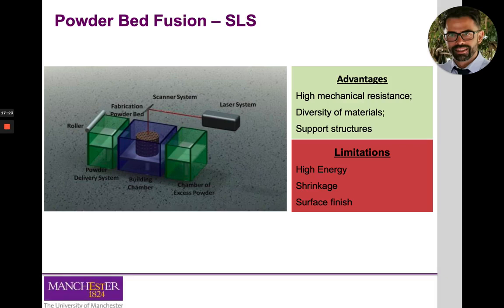Advantages of powder bed fusion include the high mechanical resistance of produced components due to the intrinsic properties of metals and polymers, and the diversity of materials available — from polymers to metals, ceramics, and composites. In many cases, no dedicated support structures are needed because loose powder serves that function. However, the high energy required to melt or sinter particles significantly increases the overall cost of the system.